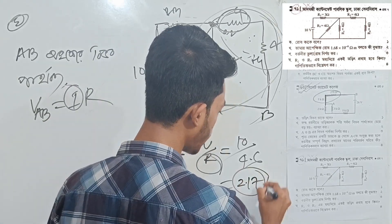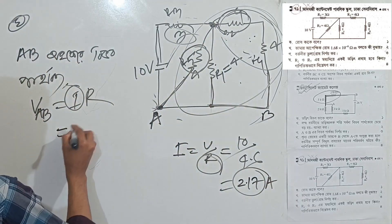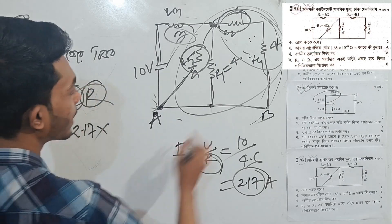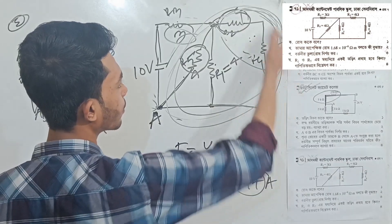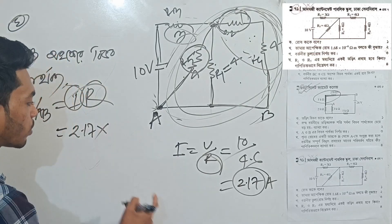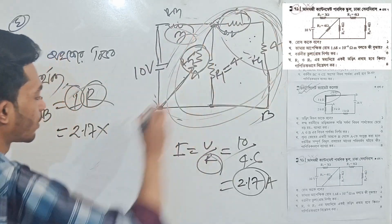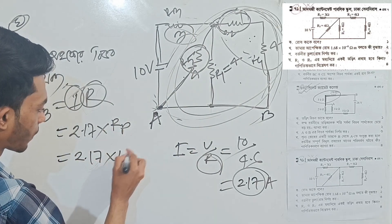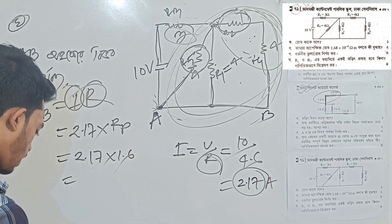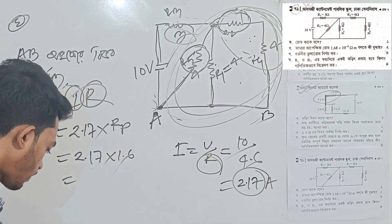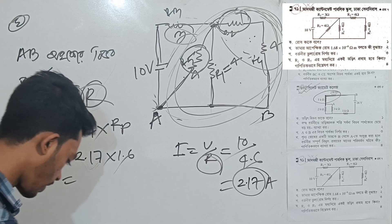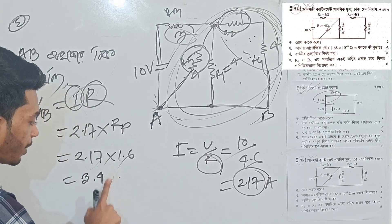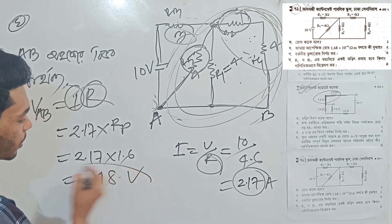10 divided by 4.6 equals 2.17. So the same thing is 2.17. The same thing is R — the total is Rp. It is 1.6. So the answer is 1.6.